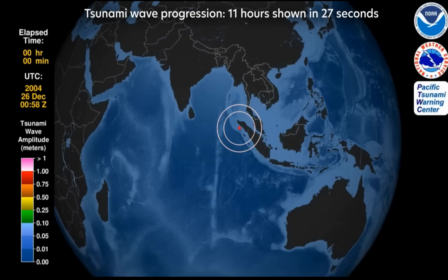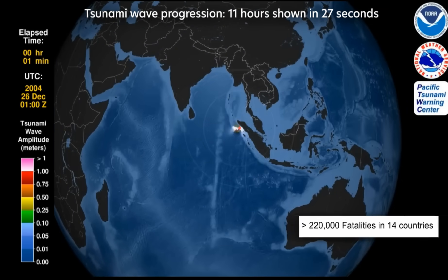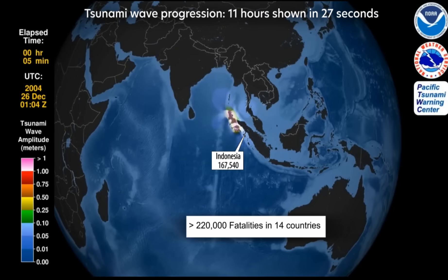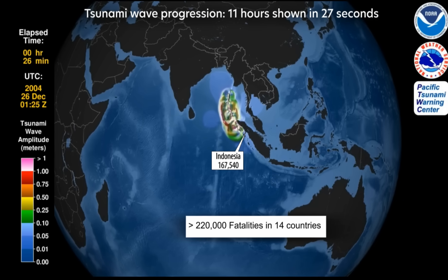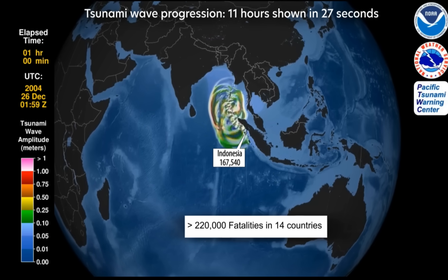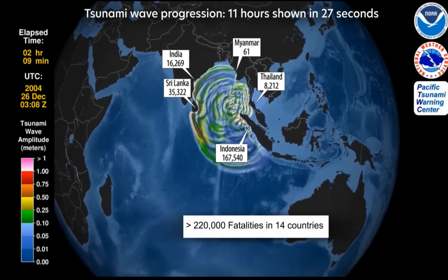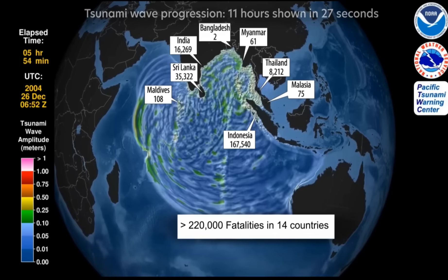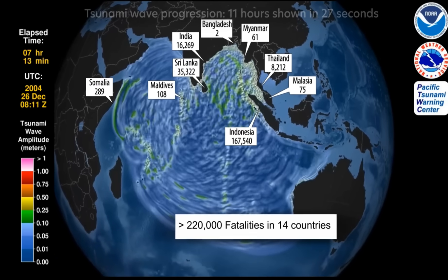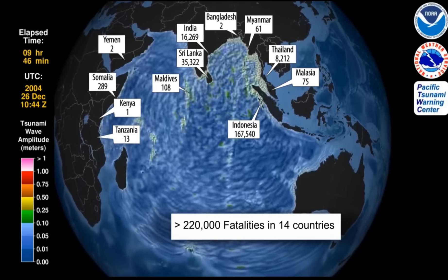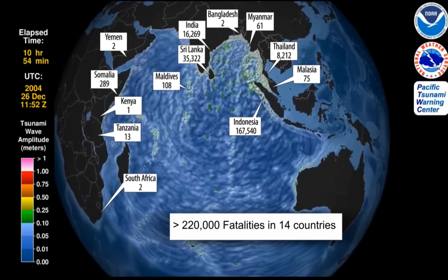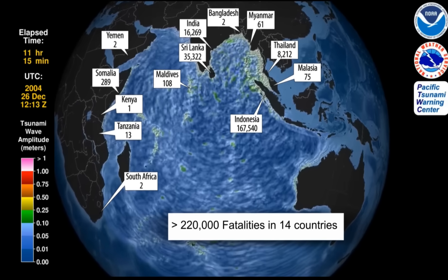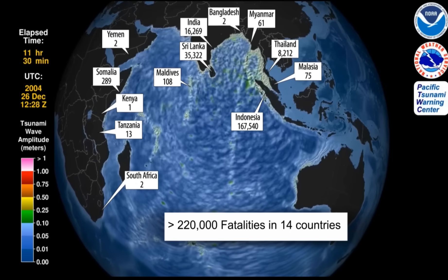On December 26, 2004, a magnitude 9.1 earthquake ruptured the Sunda subduction zone north of Sumatra. The resulting tsunami swept across the Indian Ocean Basin in 11 hours. It took over 220,000 lives in 14 countries to become the worst tsunami disaster in human history.